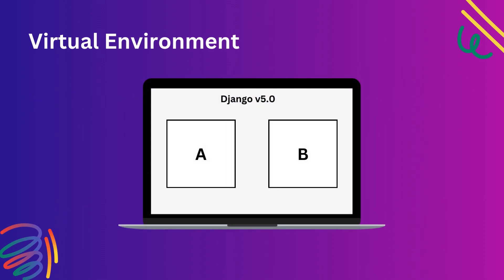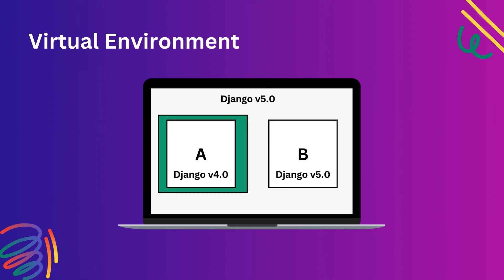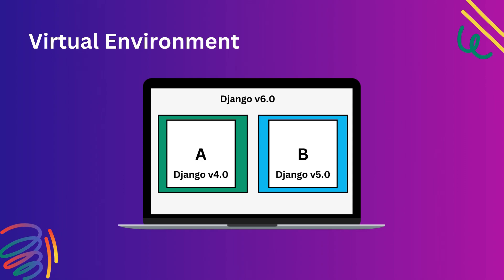Let's take an example. You are working on two projects simultaneously — Project A needs Django version 4 and Project B needs Django version 5. When you install the latest version at system level, it installs Django 5. But Project A needs version 4. So you create a virtual environment for Project A and install Django 4 inside it, and another virtual environment for Project B with Django 5. If Django 6 comes later and you install it at system level, Project A is not affected because it has its own isolated virtual environment with Django 4.